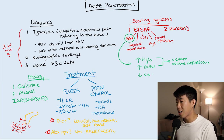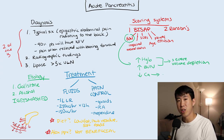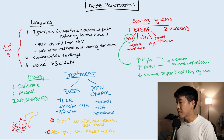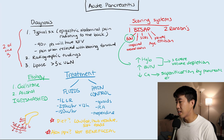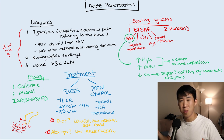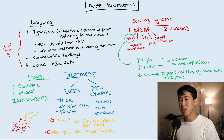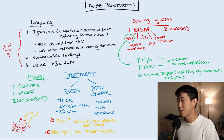A classic pimp question is why patients often come in with low calcium levels. That's really due to saponification by pancreatic enzymes — the enzymes bind calcium and form basically soap in your body, depleting calcium levels and causing very severe hypocalcemia.